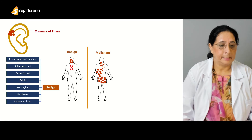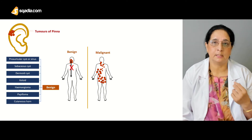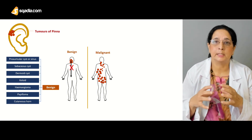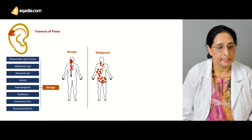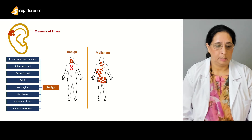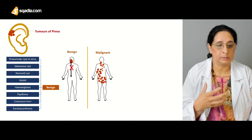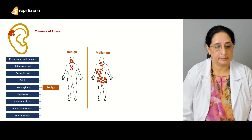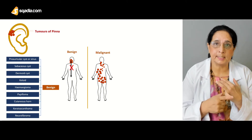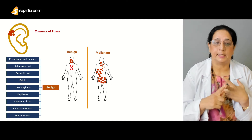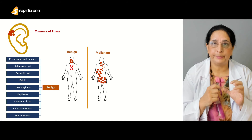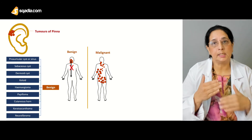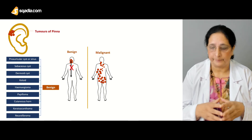Further benign tumors of the pinna include papilloma, which is a wart-like growth; cutaneous horn, named for its resemblance to an animal horn — 'cutaneous' referring to skin; keratoacanthoma; and neurofibroma. So the full list of benign tumors of the auricle or pinna is: pre-auricular cyst, sebaceous cyst, dermoid cyst, keloid, hemangioma, papilloma, cutaneous horn, keratoacanthoma, and neurofibroma.